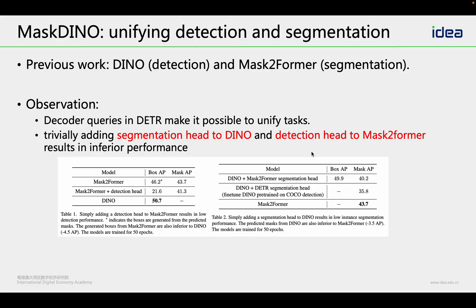Master-DINO is inspired by our previous work DINO, a powerful detection model, and also Mask2Former, which unifies three segmentation tasks in one model. We aim to combine those two models to build a unified model. However, we observe that if we trivially add a segmentation head to DINO or a detection head to Mask2Former, it will result in inferior performance. So it is not trivial to unify detection and all segmentation tasks.